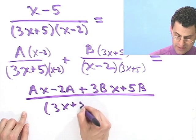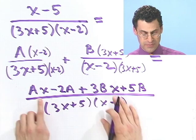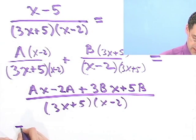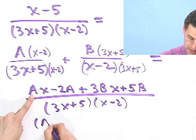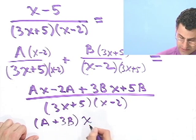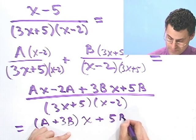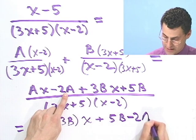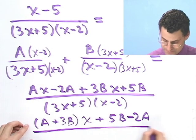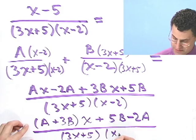I'm not going to multiply that out. I'm just going to write it out like this. And actually, I can combine these x terms here. And what I'd see is a plus 3b, all times x. And the constant terms are, let's see, 5b minus 2a. All over the bottom. 3x plus 5 times x minus 2.